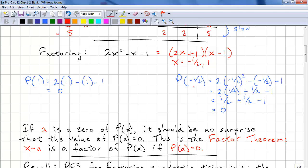P of negative 1/2. And here's where the brackets are important because we have a negative value. So 2 times negative 1/2 squared, that's a quarter times 2, which is 1/2. And we have minus negative 1/2, so that's plus 1/2, minus 1. So 1/2 plus 1/2 minus 1 equals 0.